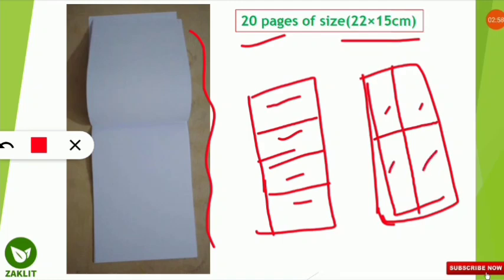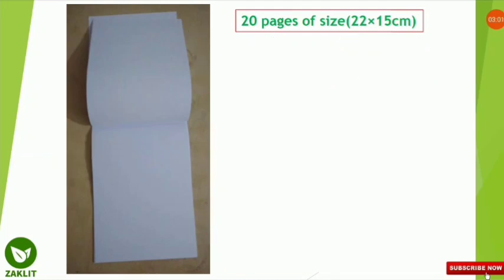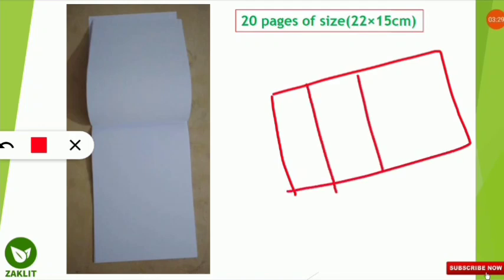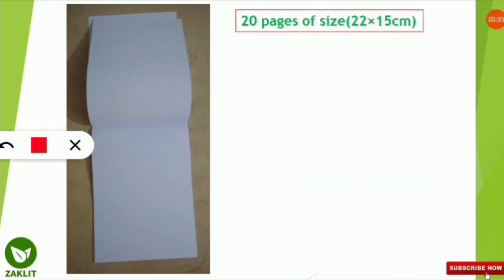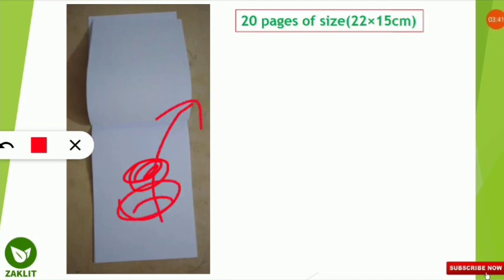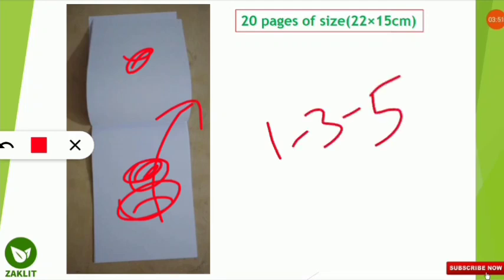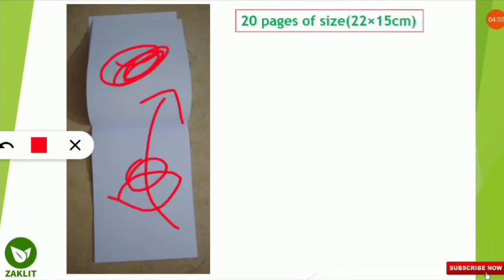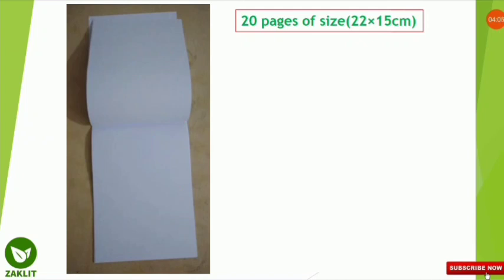One more tip about the scribble pad: use only the front side of each page — page one, then three, then five — skipping the back sides to save time. If all pages are used up, flip the scribble pad completely and start again from page one. Also, ask the examiner before the exam whether extra scribble pads will be provided, as some centers do not offer additional sheets.